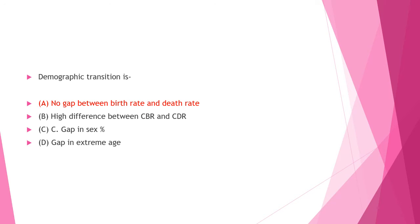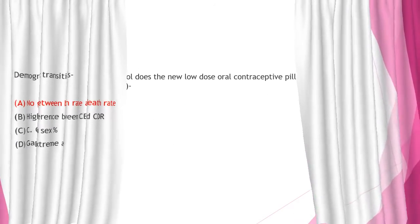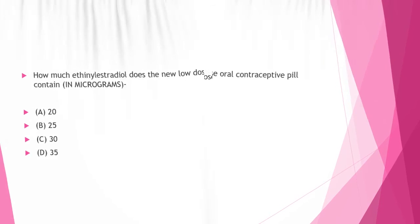Next question: How much ethyl estradiol does the new low-dose oral contraceptive pill contain in micrograms? Option A: 20 micrograms, Option B: 25 micrograms, Option C: 30 micrograms, Option D: 35 micrograms. Answer to this question is Option A: 20 micrograms.